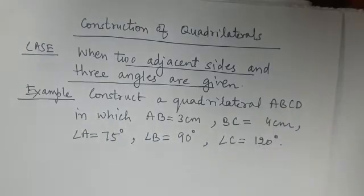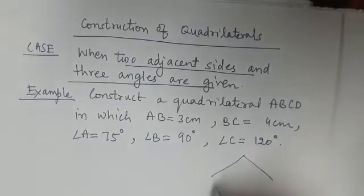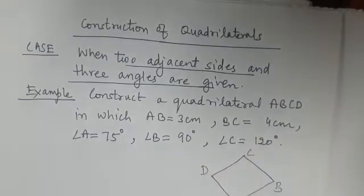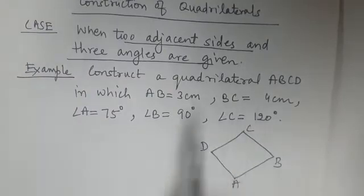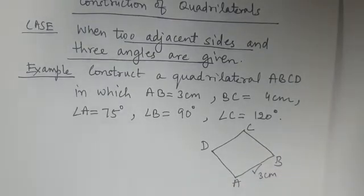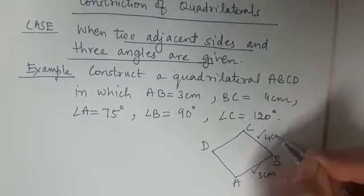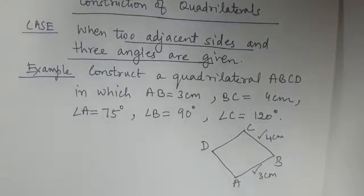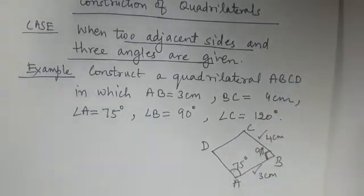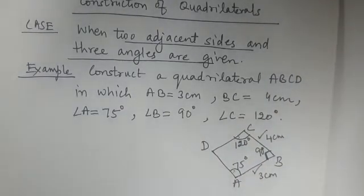Construct a quadrilateral ABCD in which AB is 3 centimeters. I'm making a rough sketch — you know that a quadrilateral is a polygon having four sides. So I've drawn a rough sketch of ABCD: AB is 3 cm, BC is 4 cm, angle A is 75 degrees, angle B is 90 degrees, and angle C is 120 degrees.